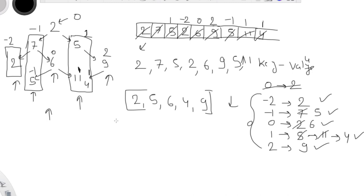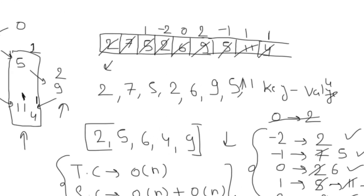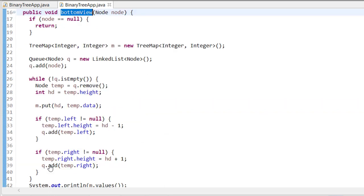For time complexity, we iterate through each node one by one, so the time complexity is O(n). For space complexity, we are taking a queue of n elements which is O(n), and we are also taking a map which is also O(n). So the overall space complexity is O(n).